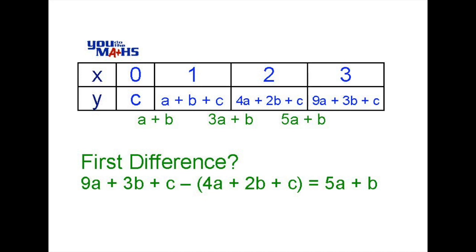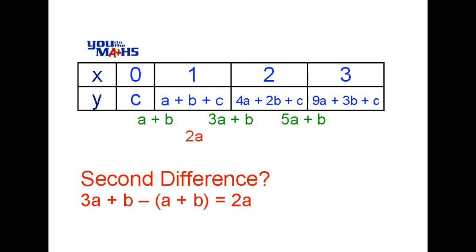Let's have a look at the second differences which are the differences of the first difference values. 3a minus a is 2a and the b's are eliminated. 5a minus 3a also gives 2a and once again the b's are eliminated. So we have a constant second difference which is what we expected for a quadratic rule.